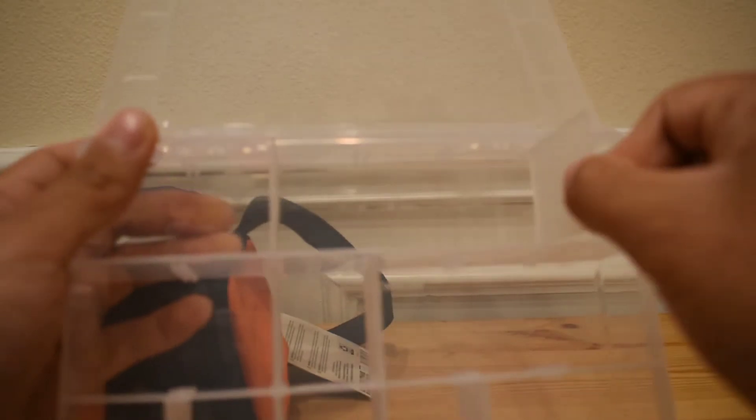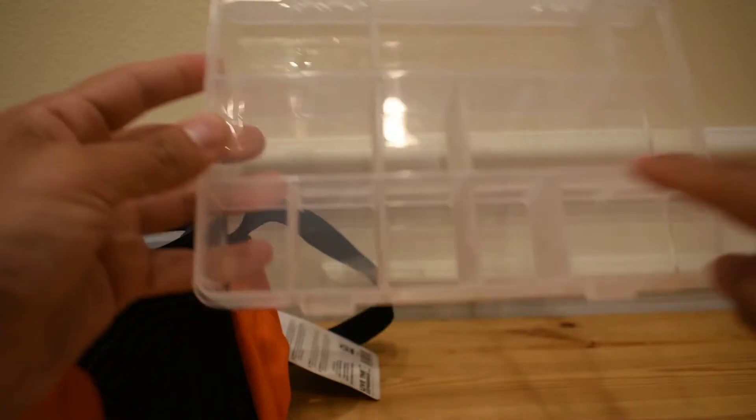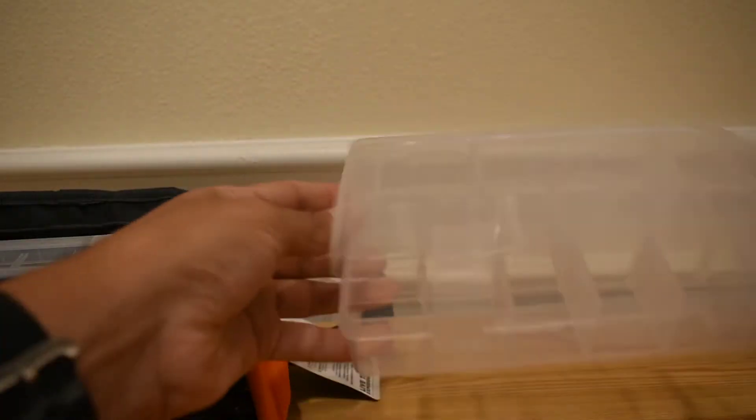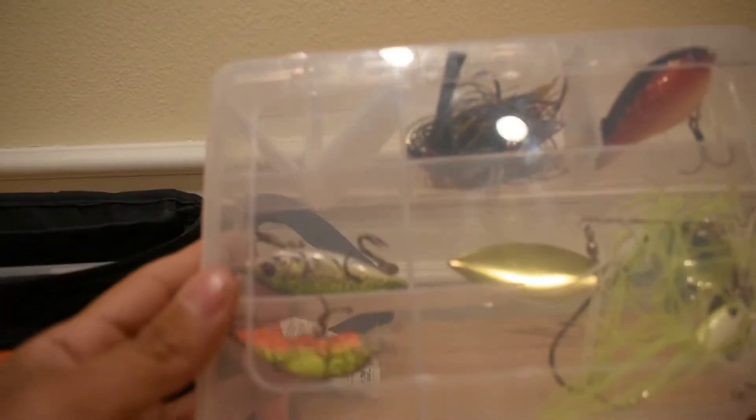There you can see the little dividers like this. You have a couple of different options for how many spots to put them on. It came with three of these boxes. Now one of them I did cut down already. There's a couple of lures there for demonstration.